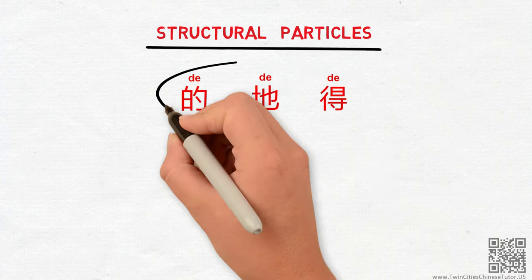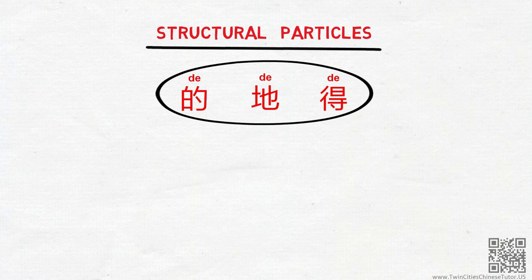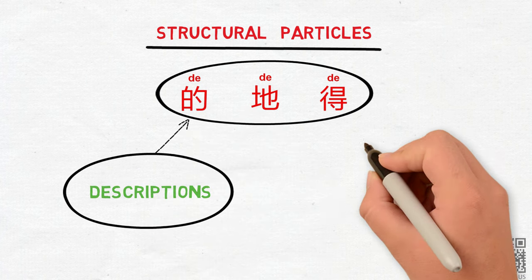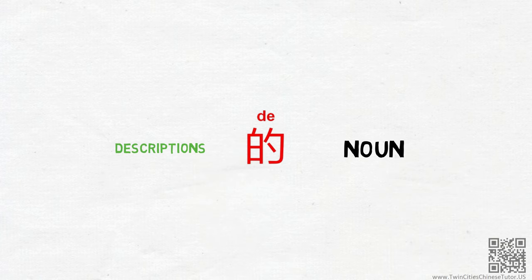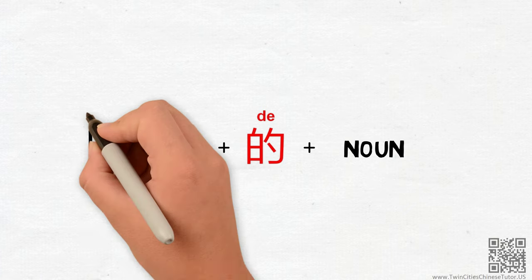When serving as structural particles, the main function of these DEs are to connect descriptions to different types of words. The first DE is used to connect nouns with their descriptions. In Chinese, it goes description plus DE plus noun.